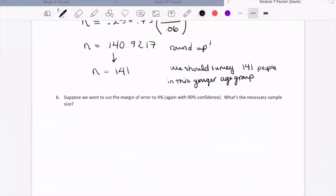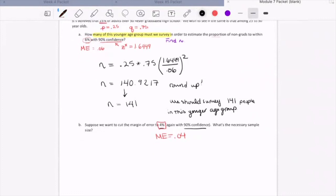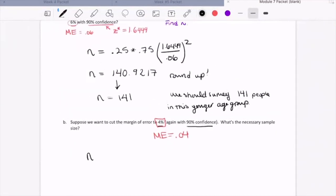Now let's take a look at part B. Part B says, suppose we want to cut the margin of error to 4%, but again using 90% confidence. What is the necessary sample size? So how is this problem different than the one we just looked at? Well, it's very similar. Everything's the same, but now our margin of error that we're going to use in our calculation is 0.04. So take a moment to pause the video and set up the calculation on your own. And after you've given yourself some time to look at that problem, then you can check your work. So our formula that we need to calculate is going to be n is equal to 0.25 times 0.75 times 1.6449. We still have that same confidence level, so we still have the same Z star, but now we just divide by 0.04 and we square.